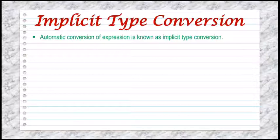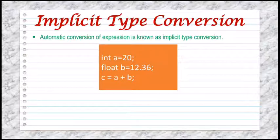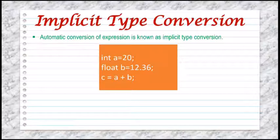In implicit type conversion, conversion is done automatically. During evaluation, it follows strict rules. If the operands are of different types — for example, integer and float — the lower type is automatically converted to the higher type before the operation proceeds, and the result is of the higher type. Here, integer is the lower type and float is the higher type, so the calculation of an integer and float number will result in a floating point number. After adding an integer value and a float, the answer will be a floating number.